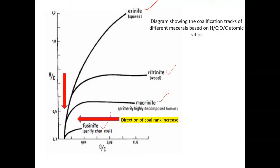The exinites are quite high in hydrogen content, with an H/C ratio of almost 1.2. Vitrinite has a lower H/C ratio of almost 0.7. Macrinite is again less, and the lowest is fusenite. The same applies to the O/C ratio. These arrows point towards the direction of coal rank increase — coals of lower rank have higher amounts of hydrogen and oxygen content. As you go towards the increasing rank, the H/C ratio and O/C ratio decrease, meaning the amount of carbon increases while hydrogen and oxygen decrease.